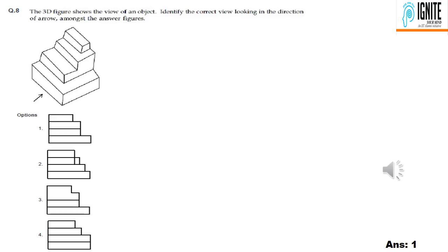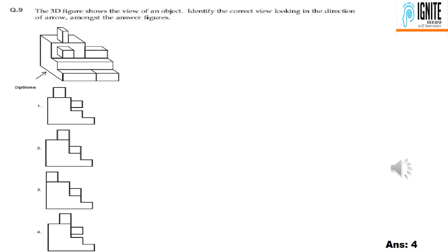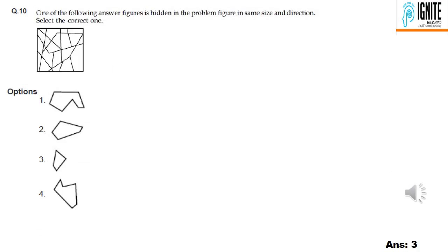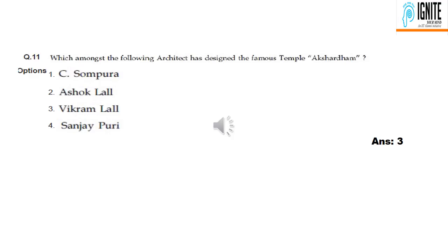Question 8: we have a 3D figure and we need to find the view indicated by the arrow mark. Option 1 is the correct view. Question 9 follows. Question 11: which of the following architects designed the famous temple? Option 4 is correct.